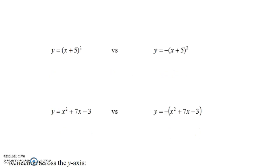Same thing if we had y equals x² + 7x − 3 — whatever that looks like, it's a parabola. But if we put a big negative in front of it — not just a negative in front of the first term x², but negative of the whole thing — then the graph would flip upside down.